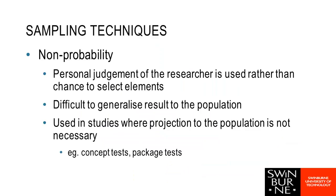A non-probability sampling technique is pretty much just what it says — it's one which has not been selected through some sort of random method. There is normally some sort of personal judgment on the part of the researcher, so the person conducting the sampling is, in some way or other, picking the people that are in it. One of the big disadvantages of non-probability sampling is that it is more likely to have bias and makes it much more difficult to generalise to the general population.